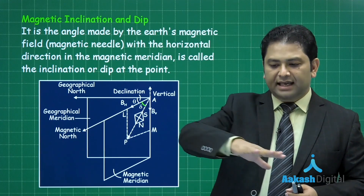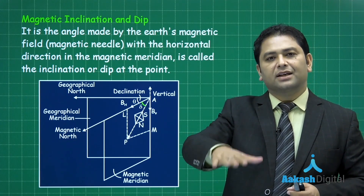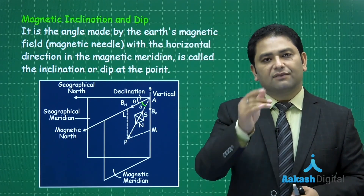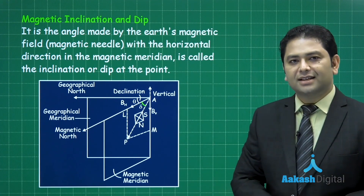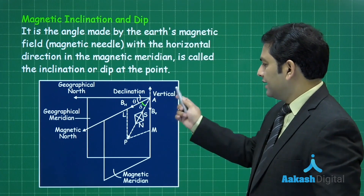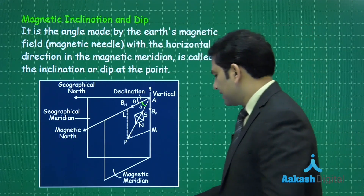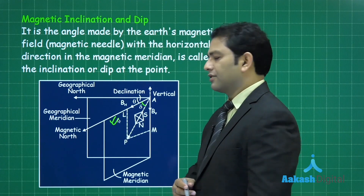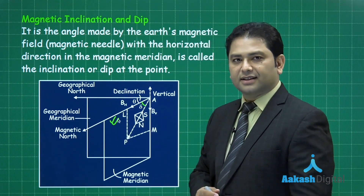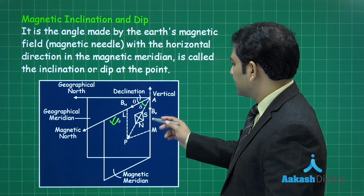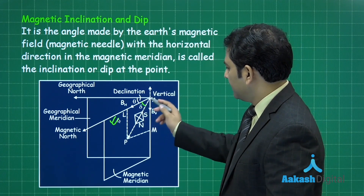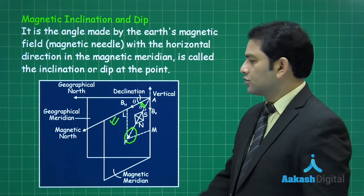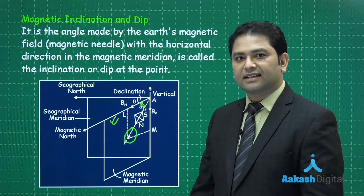A dip circle is like a compass needle, except instead of keeping it in a horizontal plane you keep it in a vertical plane. When measuring dip, the dip circle must first be brought into the magnetic meridian — there are techniques for that. At a location in the northern hemisphere, the magnetic field due to Earth is concentrated on the magnetic meridian. You can see the magnetic field direction here, and the angle it makes with the horizontal is delta — that is the dip. So we have declination and dip as two key quantities.